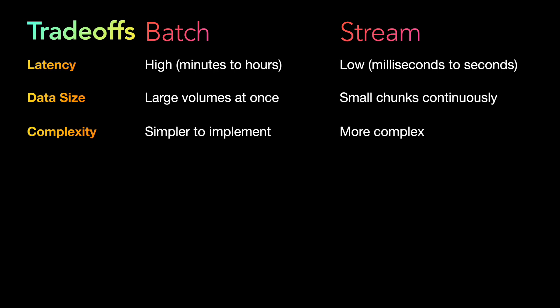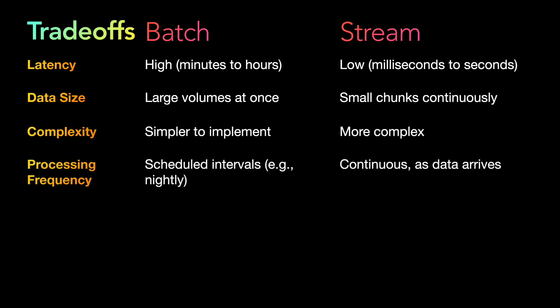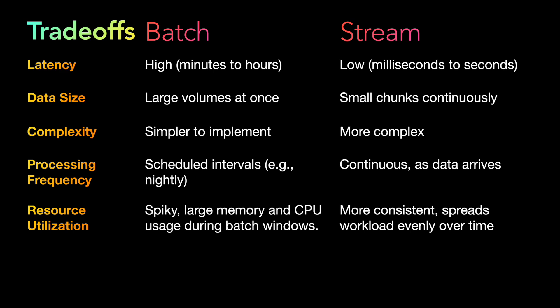Next is processing frequency. In batch processing, we primarily use scheduled intervals — nightly run jobs or other periodic systems. However, batch processing can also be used if you provide a batch API in your system. In stream processing, as mentioned, the frequency is continuous — as and when data arrives, it is continuously processed.